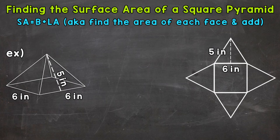When it comes to square pyramids, we have five total faces: the base and then four lateral faces. The lateral faces are the triangular faces going around the pyramid. We need to find the area of all of these and then add them together to get the total surface area.